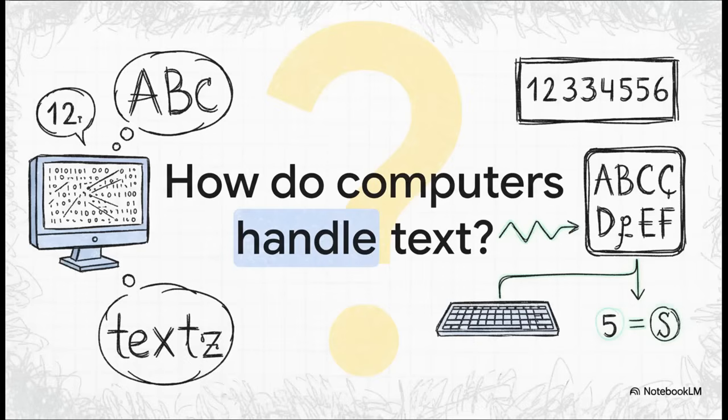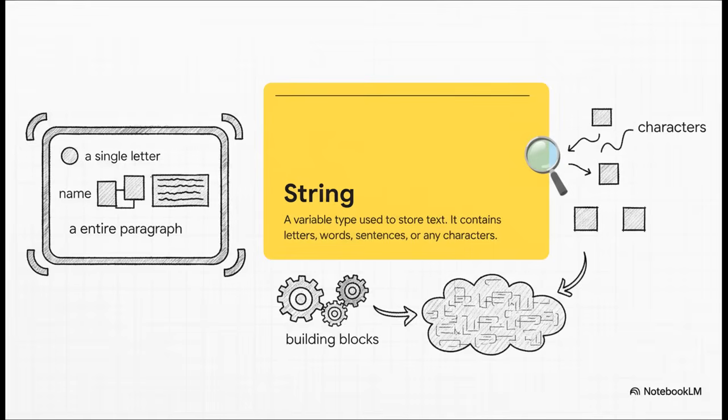So let's start with the big question, right? How do computers, these machines that really only think in numbers, manage to store and show us something so human? Like text. I mean, how do they know the difference between the number five and the letter five? The answer is a really simple but incredibly powerful concept called a string.